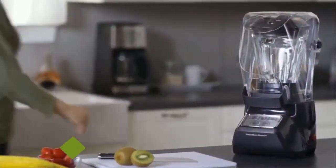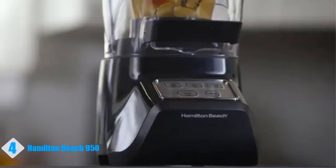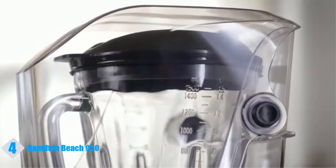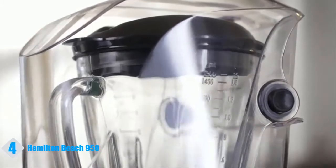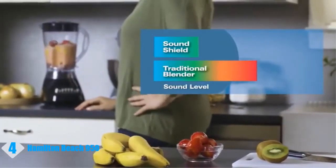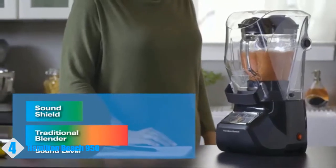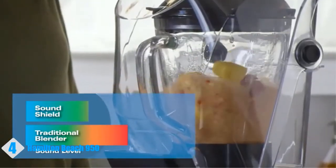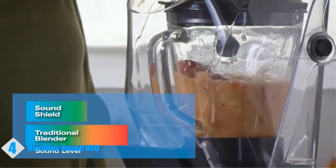The new Hamilton Beach Sound Shield 950 blender with Quiet Blend Technology is 55% quieter than a traditional blender. Here's a traditional blender, and here's the Sound Shield 950 in action.